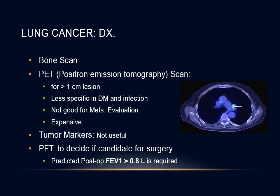Pulmonary function testing is needed to decide if the patient is a candidate for surgery — to ensure enough lung volume to breathe after resection. Before major surgery with resection of part of the lung, we must ensure a predicted postoperative FEV1 of more than 0.8 liters to confirm the patient is safe to undergo that part of the lung resected.